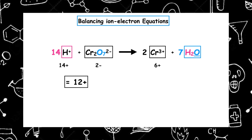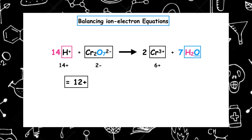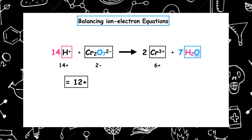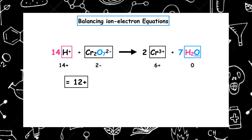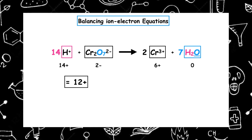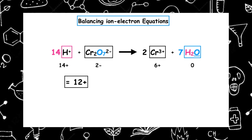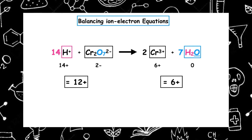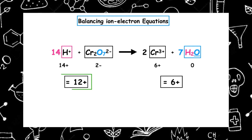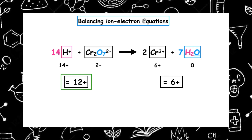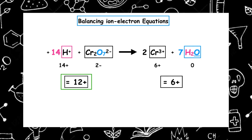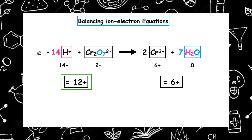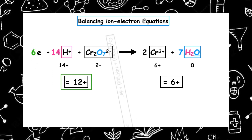On the right-hand side, I've got three plus for the chromium inside the box, multiplied by two on the outside, so that gives an overall charge of six plus. Water doesn't have a charge, so the overall charge on the right-hand side is six plus. Which number is higher? That's 12 plus, so that's where the electrons are going to go. I need to get from 12 down to 6, so I'm going to have to have six electrons on the left-hand side.